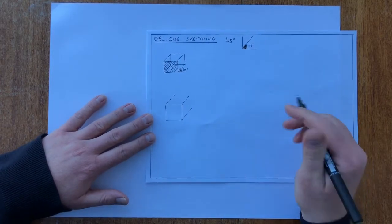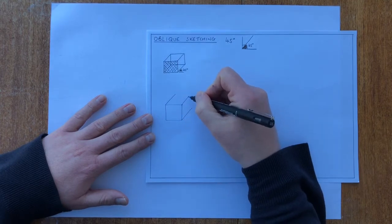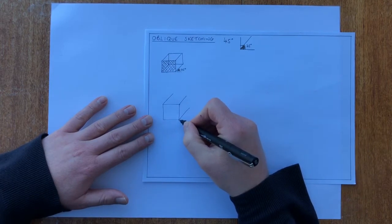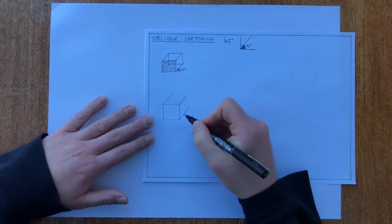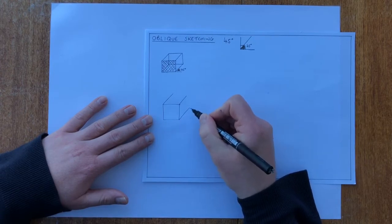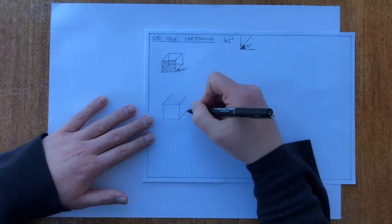Same rule as when we do isometric sketching. Whatever you draw at the front, you should draw the same at the back. With oblique, one of the rules is that the width of the object is half the size than it would be. So if we draw a cube, it'll be half the size, something like here.